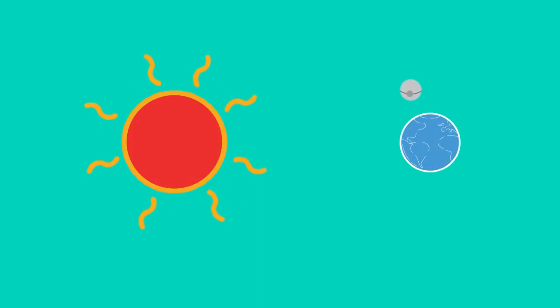During a solar eclipse, the moon passes between the sun and the earth. Light traveling in a straight line cannot pass through the opaque moon, and so a shadow is cast on part of the earth.